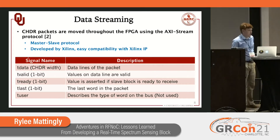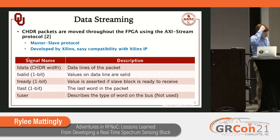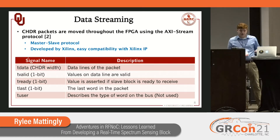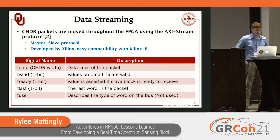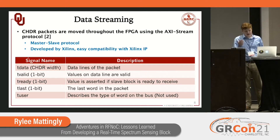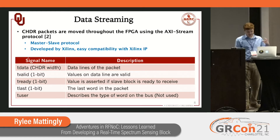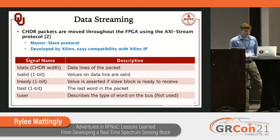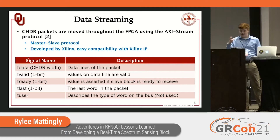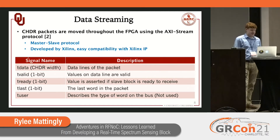CHDR packets are moved through the FPGA using an AXI Stream protocol, which was really standardized by Xilinx. Most of their IP blocks use this AXI Stream protocol so that you can interface directly with them. In fact, the FFT block provided with the framework takes advantage of this — you see the AXI Stream being piped into the FFT IP block.